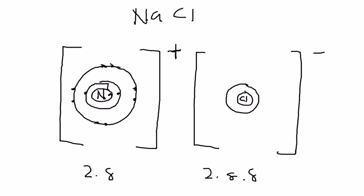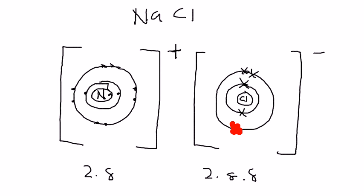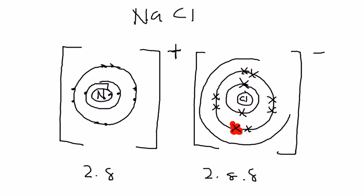Then the second layer — add crosses. And in the third layer, be very careful: we have seven crosses, which are the original electrons chlorine has, and one dot from sodium — that is the electron given away from sodium. So this is the actual dot and cross diagram.